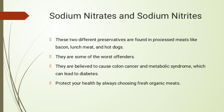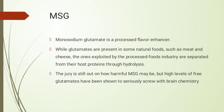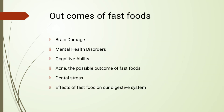Protect your health by always choosing fresh organic meats. Now, what is MSG? MSG is monosodium glutamate, a processed flavor enhancer. While glutamates are present in some natural foods such as meat and cheese, the ones used by the processed foods industry are separated from their host proteins through hydrolysis. High levels of free glutamates have been shown to seriously disrupt brain chemistry.